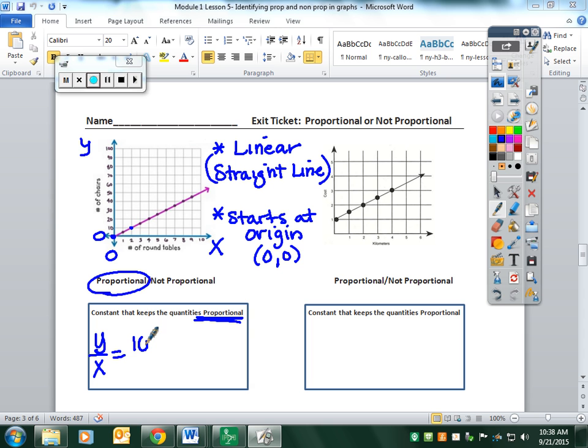My x value at this point was 2, so when I divide 10 by 2, I end up with 5. 5 is my constant of proportionality, and that 5 would be consistent for every single point on this graph. So this one is a proportional relationship.